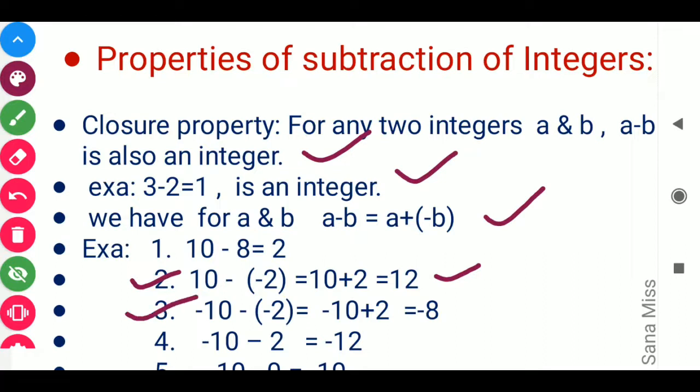Moving to example 3: we have minus 10 minus (minus 2), meaning we subtract minus 2 from minus 10. Write the first integer as it is — that is minus 10 — then minus of minus becomes plus 2. So we have minus 10 plus 2. Here we have one negative and one positive integer, so we perform subtraction.